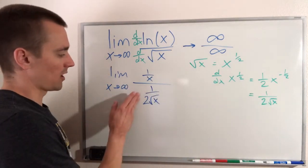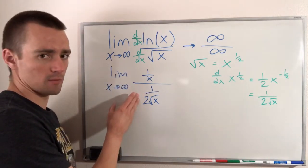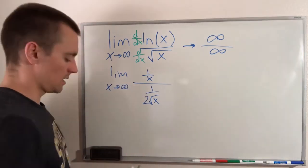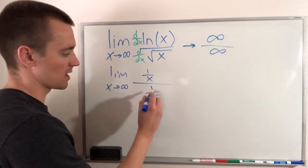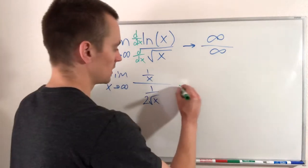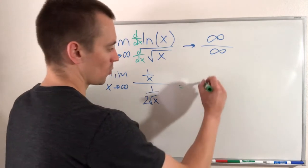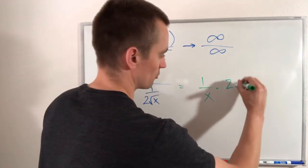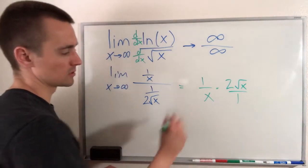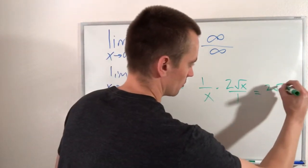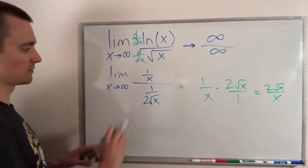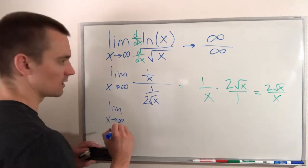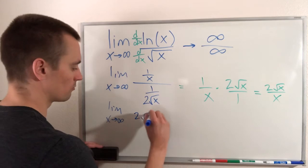So now we have a fraction in our numerator and our denominator. Dividing by something is the same as multiplying by its reciprocal. Instead of saying 1 over x divided by 1 over 2 root x, we can say this is the same as 1 over x times the reciprocal of 1 over 2 root x, which is just flipping the fraction — so 2 root x over 1. Simplifying this gives us 2 root x over x. So instead we can take the limit as x goes to infinity of 2 root x over x.